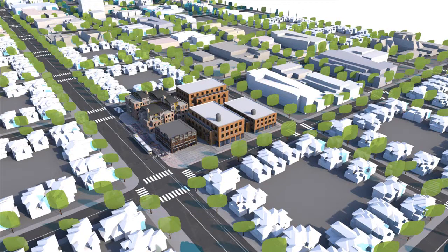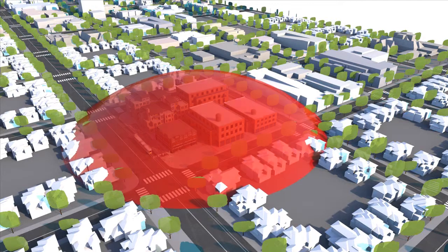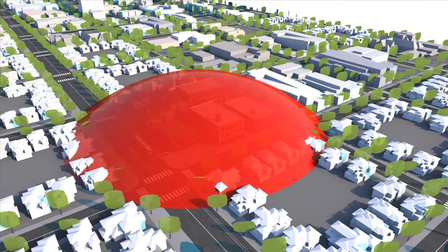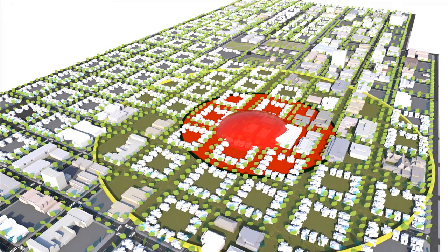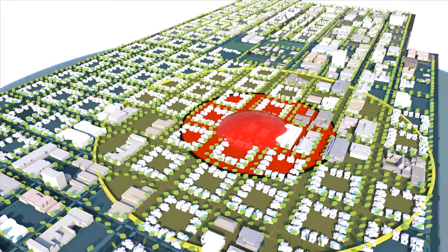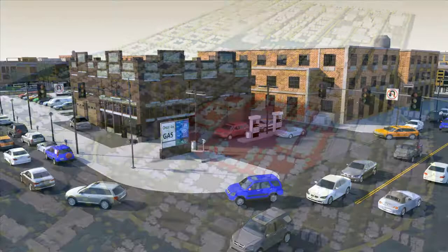Landscape architects and planners measure how long it takes to walk distances in a neighborhood. In this zone, centered on a transit-oriented development, or TOD, it takes 5 minutes to walk from the center of the TOD across the radius. 10-minute and 15-minute zones help define the extent people will walk in their neighborhoods to reach a destination.